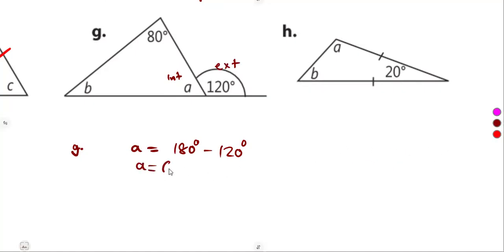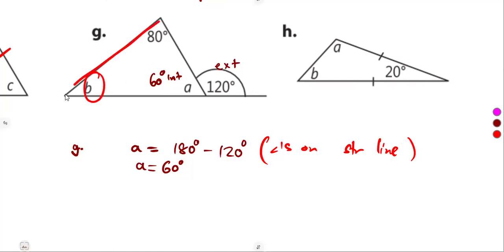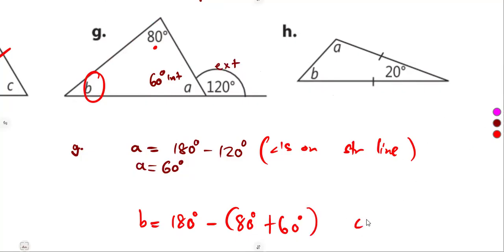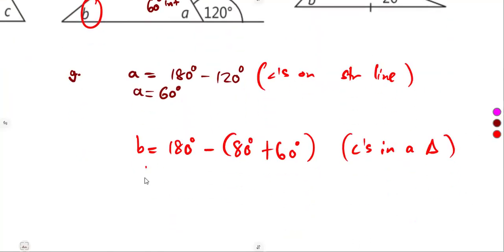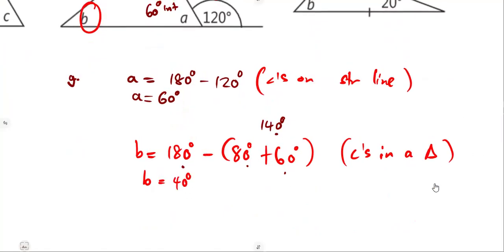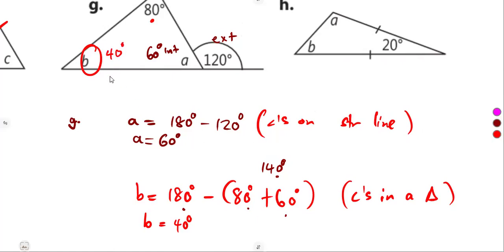So angle A is 60 degrees — angles on a straight line. Now angle B can be calculated using the interior angles of a triangle adding up to 180 degrees: 180 minus 80 minus 60 equals 40 degrees. So angle B is 40 degrees.